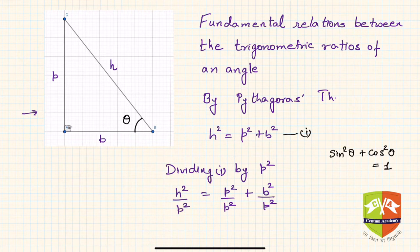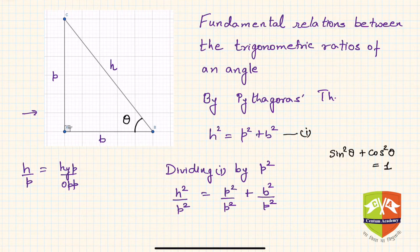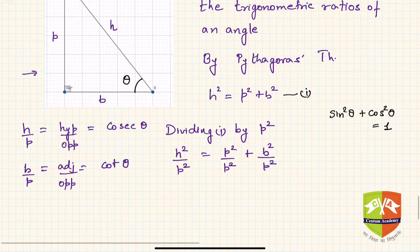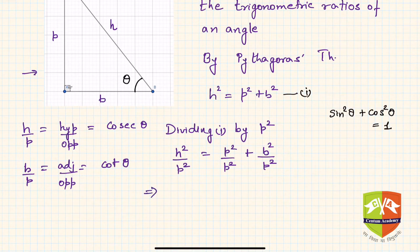Here p is the perpendicular length in triangle ABC, so division by p squared is allowed. Now let us closely look at this triangle and find out what h upon p is. H upon p is hypotenuse divided by opposite, which is nothing but cosecant theta.